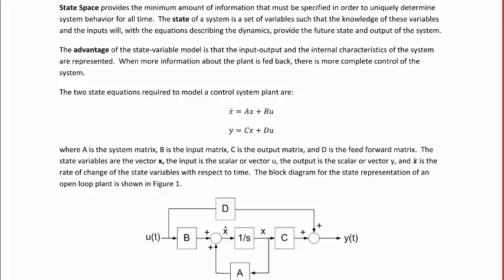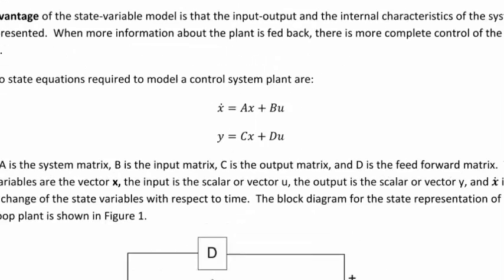The advantage of the state variable model is that the input, output, and the internal characteristics of the system are represented. When more information about the plant is fed back, there is more complete control of the system. The two state equations required to model a control system plant are x dot equals Ax plus Bu and y equals Cx plus Du.